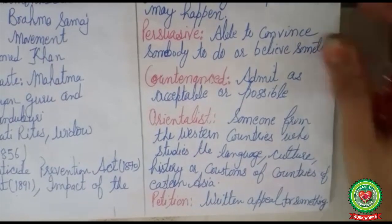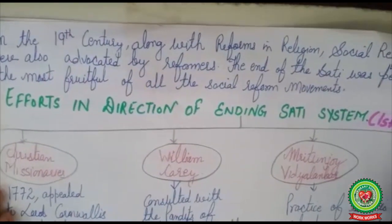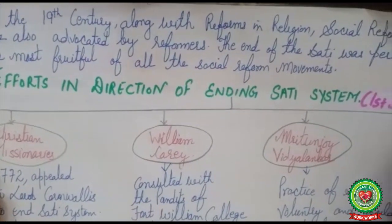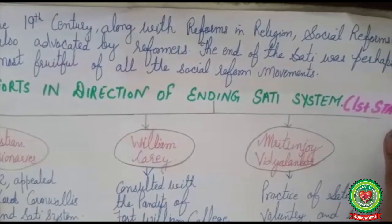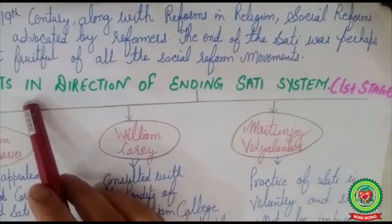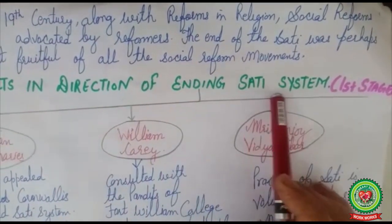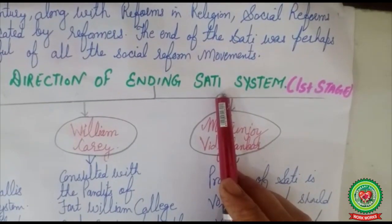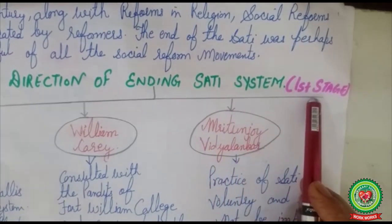In the 19th century, along with reforms in religion, social reforms were also advocated by reformers. The end of sati was perhaps the most fruitful of all the social reform movements. Sati was a system according to which a woman was forced to die on the funeral pyre of her dead husband. Because ending sati was a long struggle, we will discuss it in two stages.